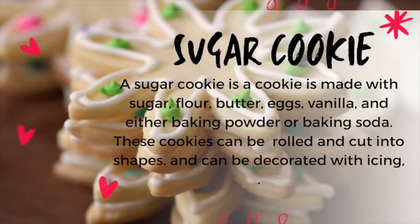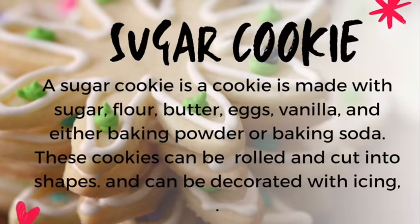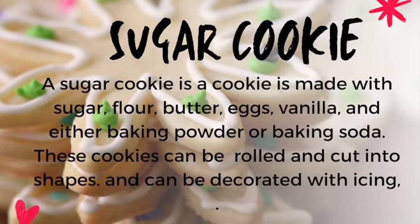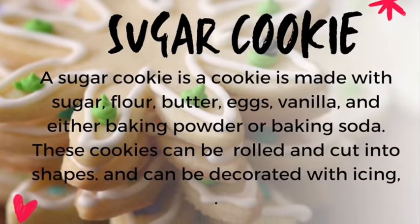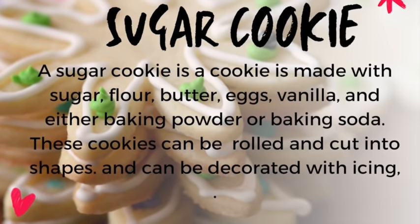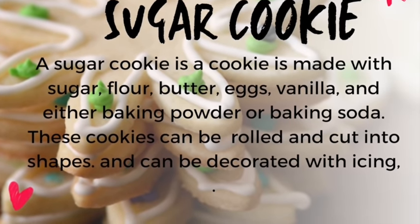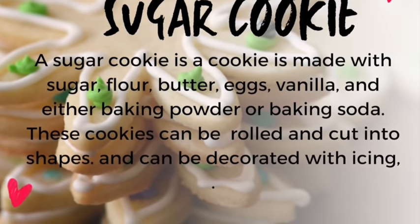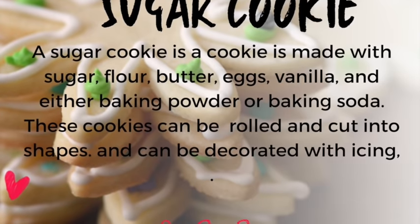A sugar cookie is a cookie that is made with sugar, flour, butter, eggs, vanilla, and either baking powder or baking soda. These cookies can be rolled out and cut into beautiful shapes, and can be decorated with icing.